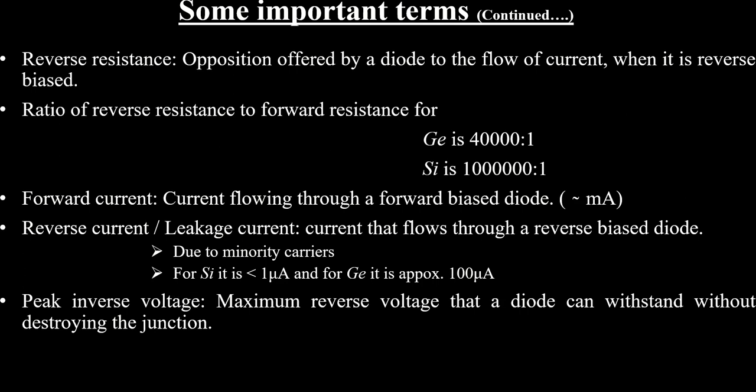Another important parameter is the peak inverse voltage (PIV). This is the maximum reverse voltage that a diode can withstand without destroying the junction. If a diode is operated with a reverse voltage greater than the PIV specified in the catalog, the diode gets damaged. We must always find or be aware of the peak inverse voltage when using diodes.